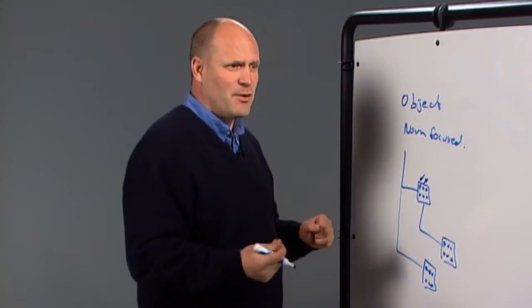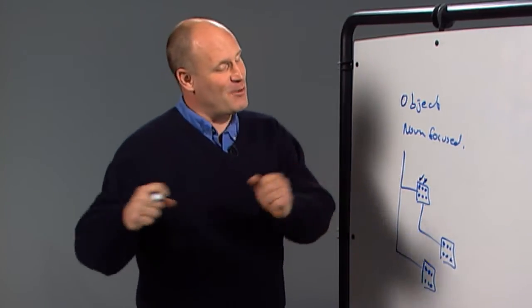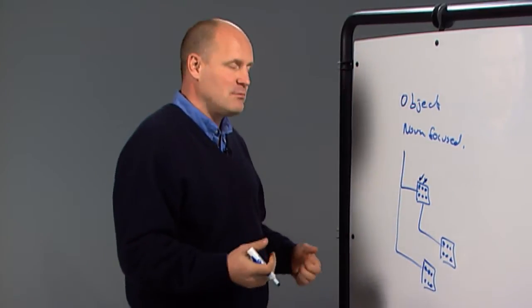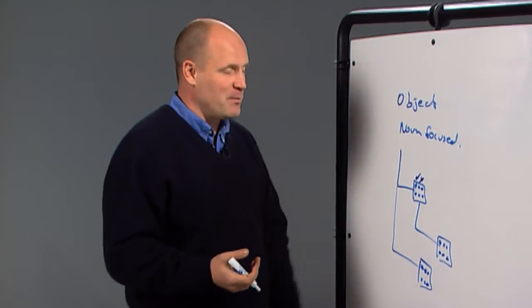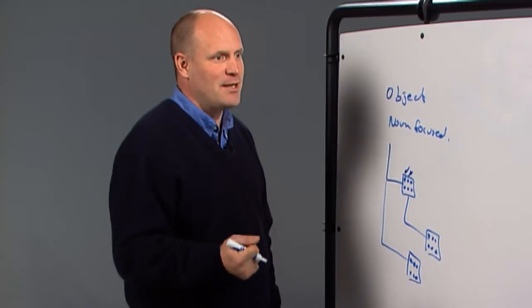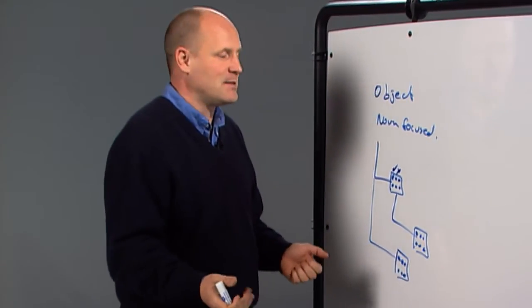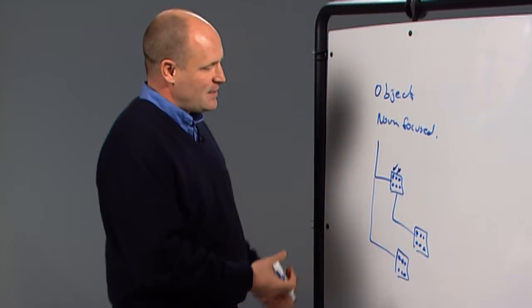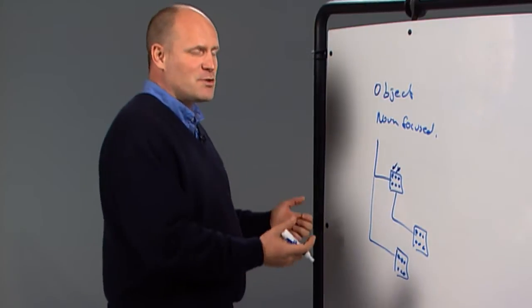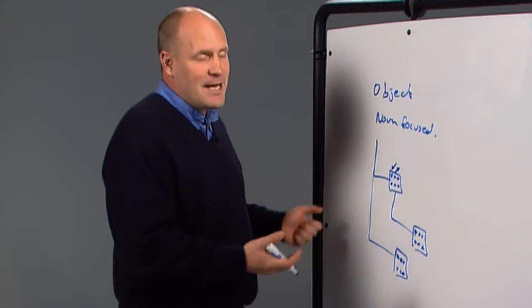But moving a mailbox involves reading it and then writing the destination. So to delegate somebody in this world the ability to move a mailbox, you're basically giving them read and write access to every single mailbox. Effectively, in MSIT, that role is one of the most dangerous ones because they can read and write Bill Gates' email.